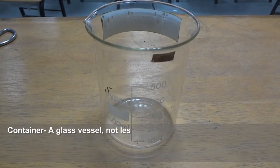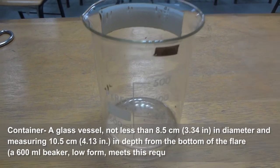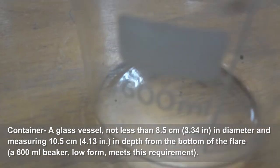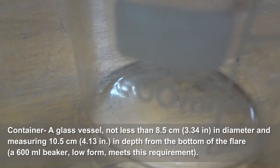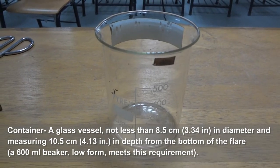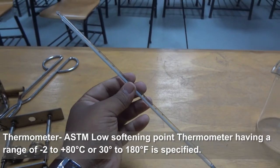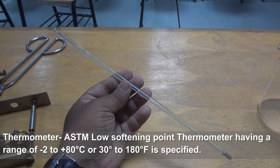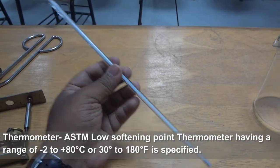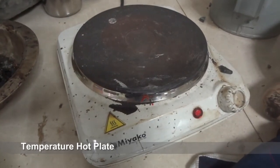A glass container of 600 ml. A thermometer having a range of temperature minus 2 to plus 80 degrees Celsius is specified. A hot plate.